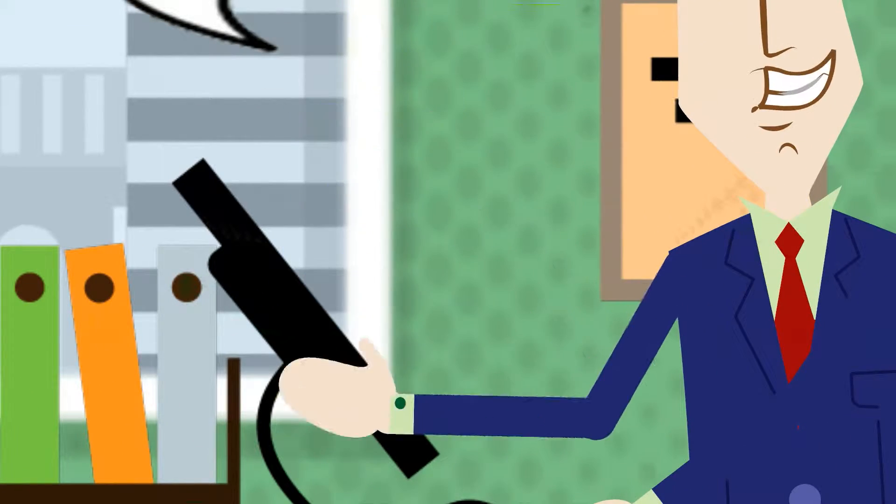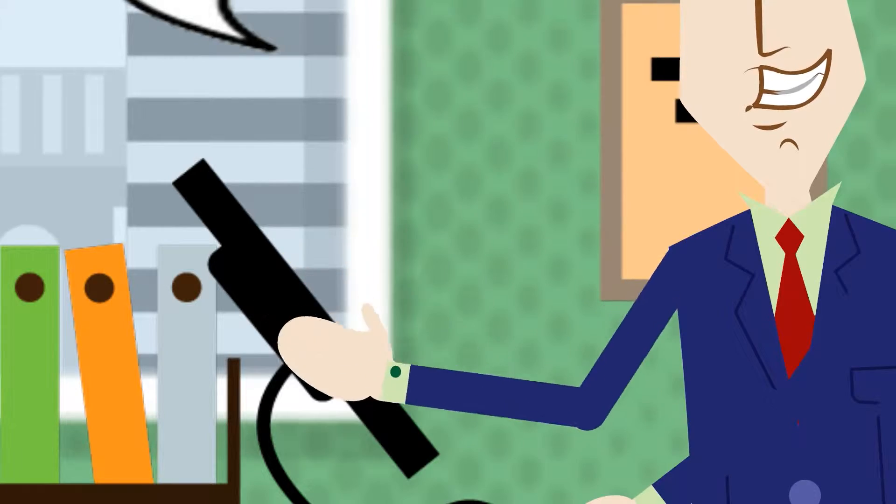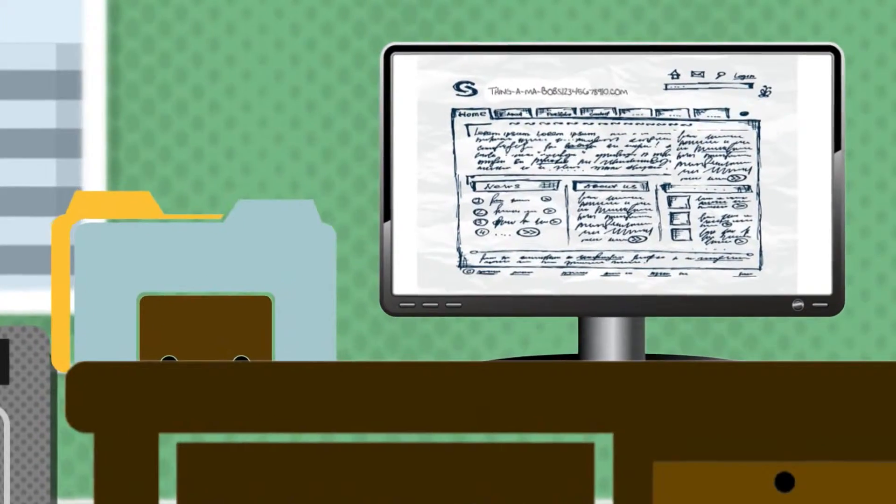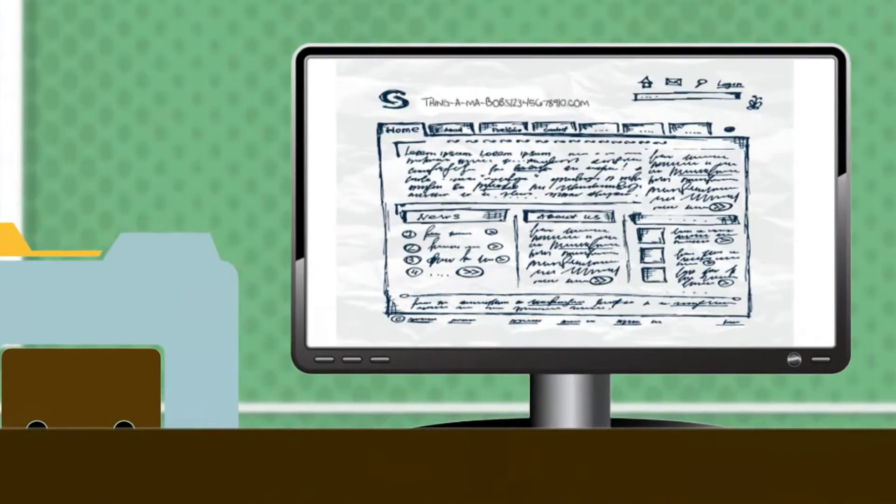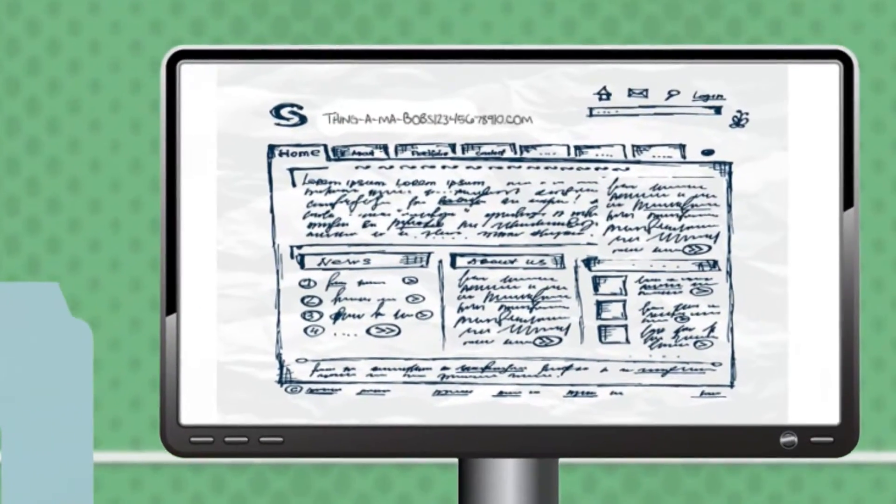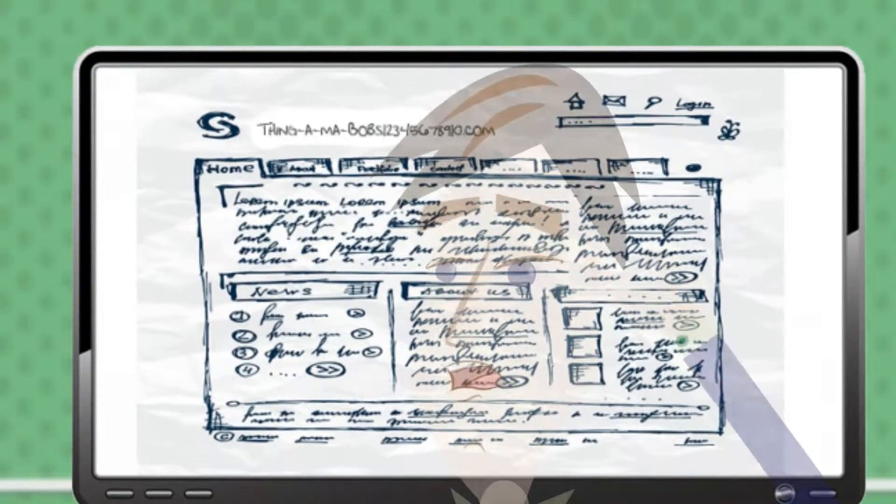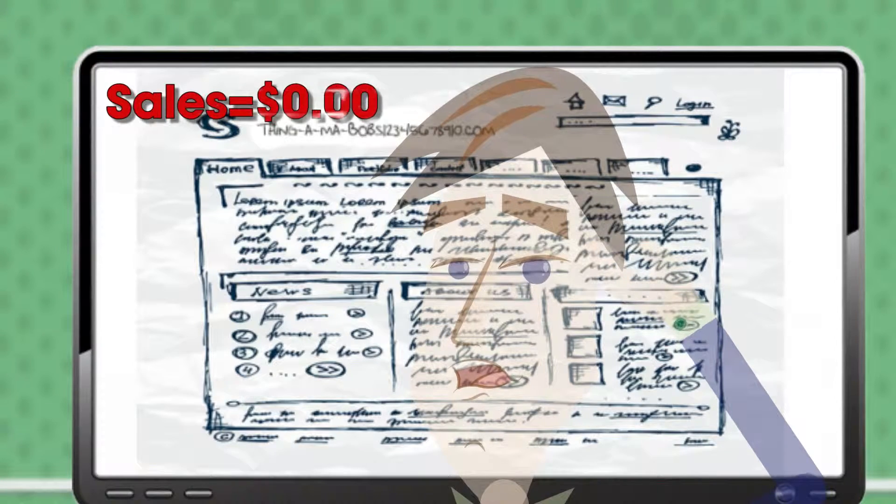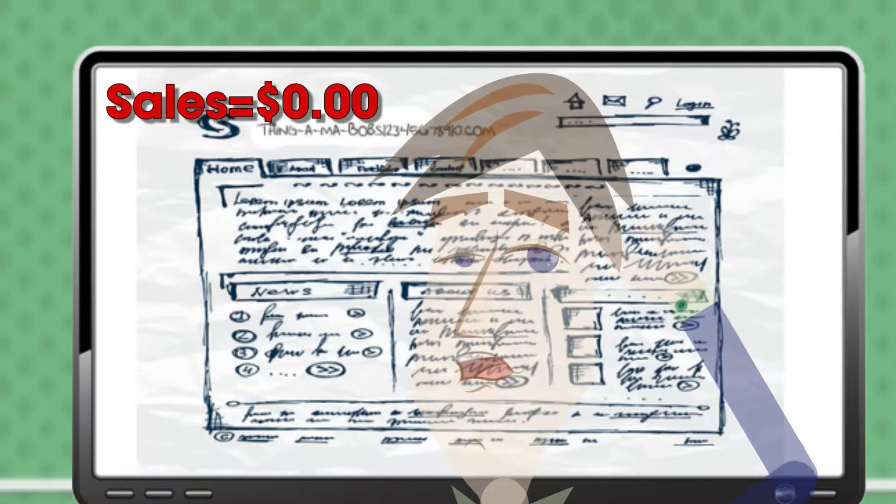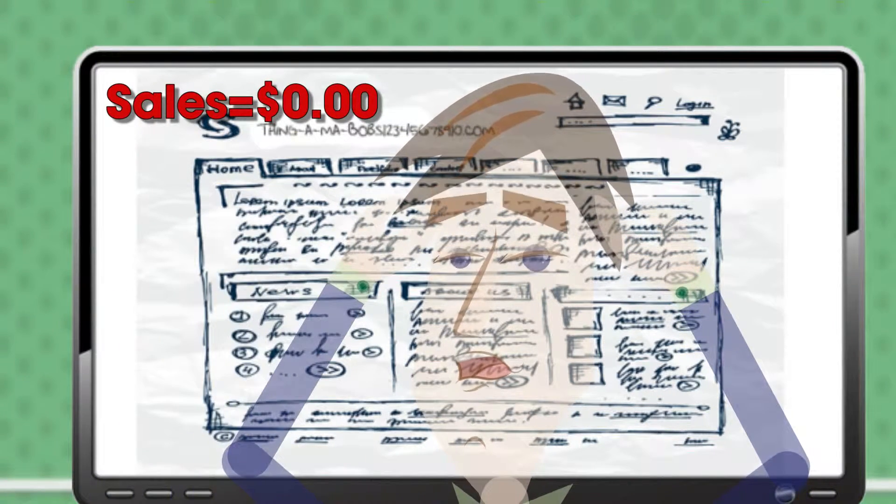Bob has spent a lot of time and money building a website to sell his thingamabobs. But there's a problem. His website is filled with boring text and his website visitors hate reading. So they leave without even looking at a single thingamabob, let alone buying one.